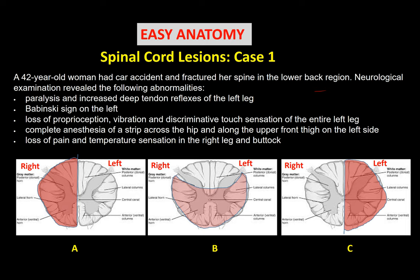Regarding pain and temperature: we lost pain and temperature on the right side, not the left. This is because the anterolateral system — the lateral spinothalamic tract — is located in the lateral column and receives pain and temperature from the opposite side. Pain and temperature fibers ascend one or two segments in the spinal cord before crossing to the opposite side, forming the spinothalamic tract, which then ascends to the thalamus on the same side. That is why pain and temperature are lost in the right leg.